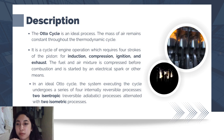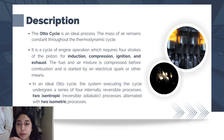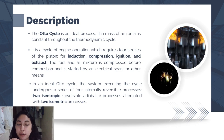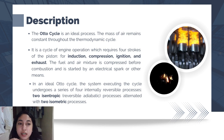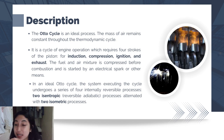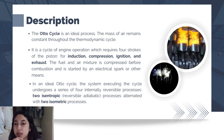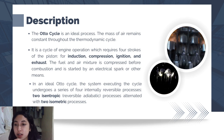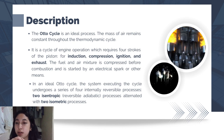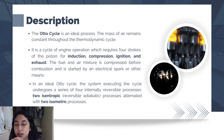The fuel and air mixture is compressed before combustion and is started by an electrical spark or other means. This spark ignition causes an explosive release of heat energy which increases the gas pressure in the cylinder, forcing the piston outwards as the gas tries to expand. In an ideal Otto cycle, the system undergoes a series of four internally reversible processes: two isentropic or reversible adiabatic processes alternated with two isometric processes.